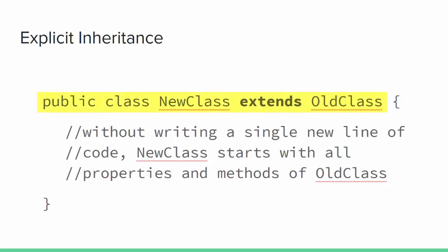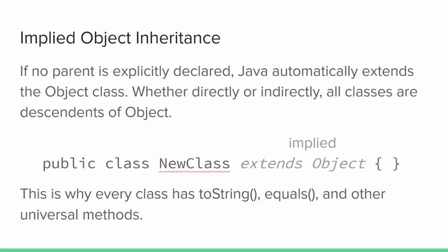You declare inheritance in the class header. In this example, new class is the child and old class is the parent. When we say `public class NewClass extends OldClass`, we're inheriting all of the properties and all of the methods of old class into new class, so without writing any new code, new class is already functionally identical to old class. In Java, if you don't explicitly declare a parent, Java will automatically assume you are extending the Object class — that's why every class you've ever written in Java already had a toString method, an equals method, and several other methods declared inside the Object class.